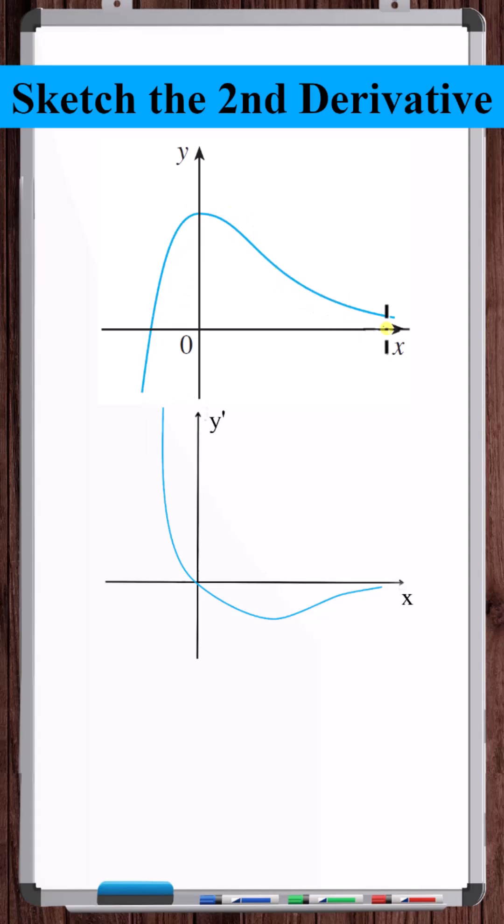Let's sketch the second derivative of this function. Looking for key points, the concavity of the y graph changes here, and the concavity of y prime changes here.